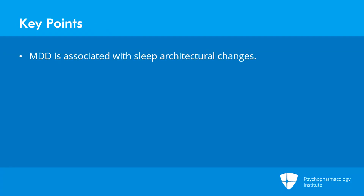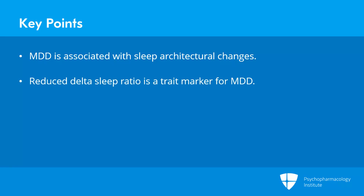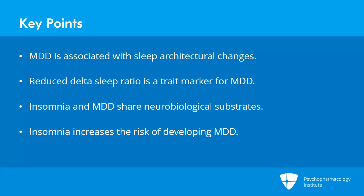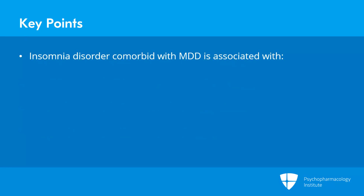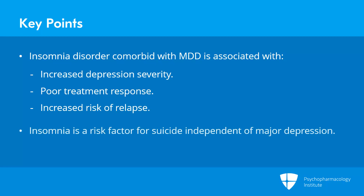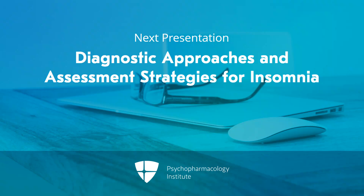Key points: Major depressive disorder is associated with sleep architectural changes including decreased slow wave activity and REM sleep disinhibition. Reduced delta sleep ratio is considered a trait marker of major depressive disorder. Insomnia disorder has a bidirectional relationship and shares common neurobiological substrates with major depressive disorder, and has been associated with significantly higher risk of developing depression across the lifespan. Comorbid insomnia disorder with major depressive disorder is associated with increased depression severity, poor treatment response, and increased risk of relapse. Insomnia is a risk factor for suicide independent of major depression, and clinical features such as short sleep duration, sleep disturbance most nights, nightmares, and early morning awakenings have been associated with increased suicide risk.